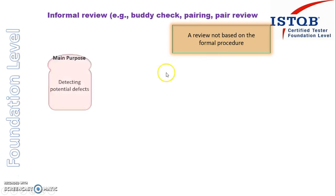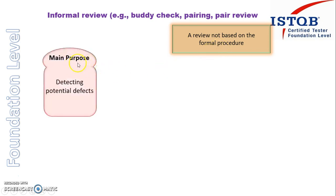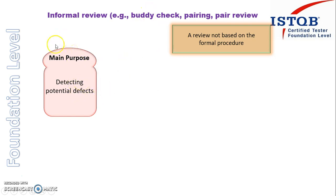Now let's see what is the main purpose of informal review. The main purpose is detecting the potential defects. So you are expecting your buddy to find out the defects in your document and then fix it — this is the main purpose.